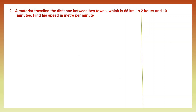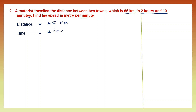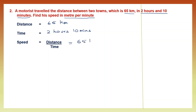Question 2. A motorist travels the distance between two towns which is 65 kilometers in 2 hours and 10 minutes. Find the speed in meters per minute. This time we are asked to find the speed in a different unit — usually it is kilometers per hour, but now it is meters per minute, so you need to read your question carefully. The distance covered is 65 kilometers and the time is 2 hours and 10 minutes. Speed is distance by time.